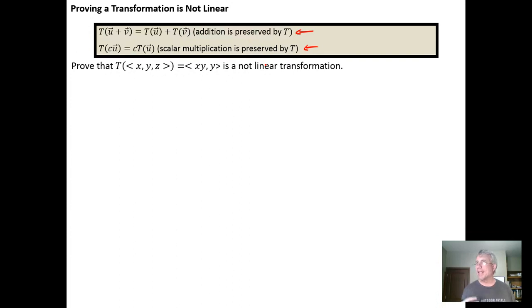It isn't necessary to show that both conditions don't hold, we just need one of them to fail. The moment one of them fails, they both fail. So typically you're going to select the one that you think is going to be easiest to demonstrate.